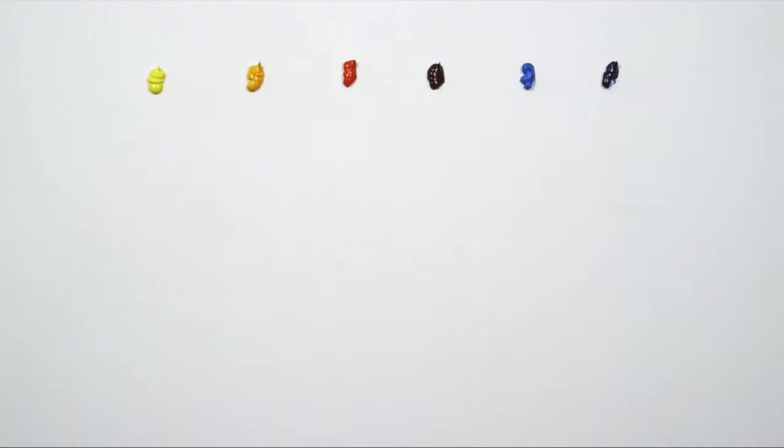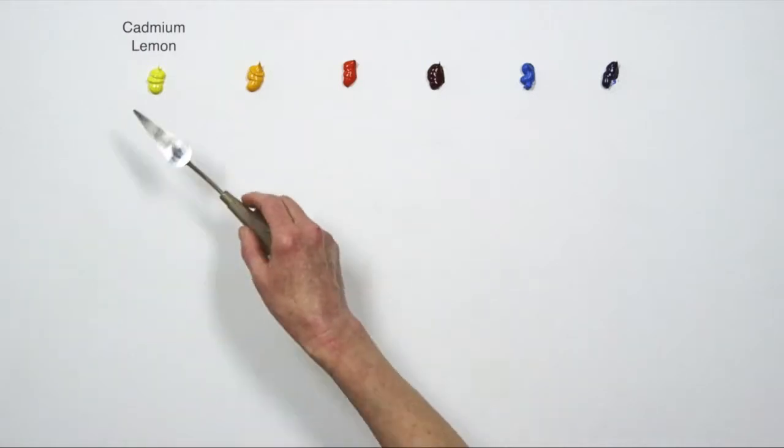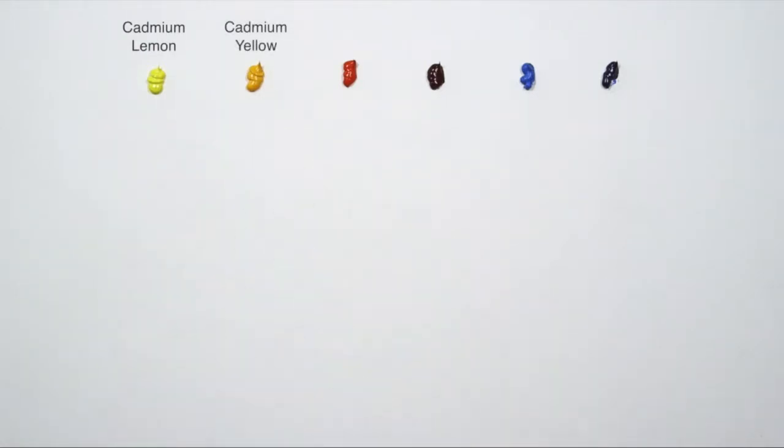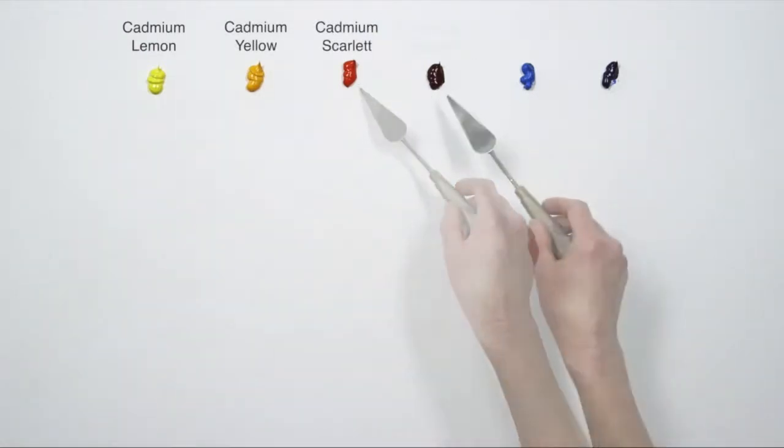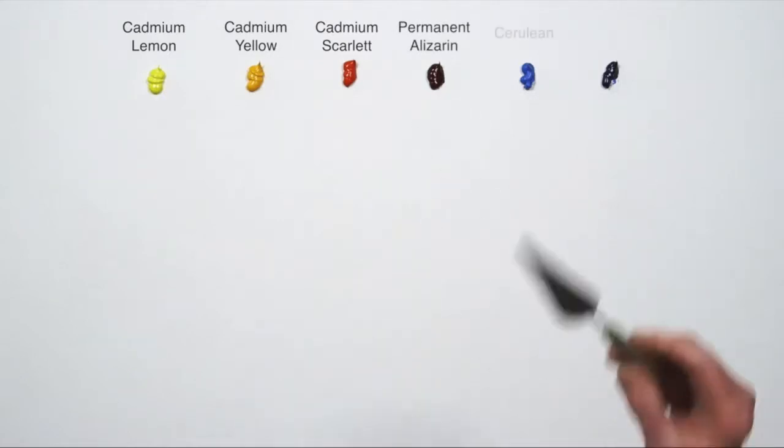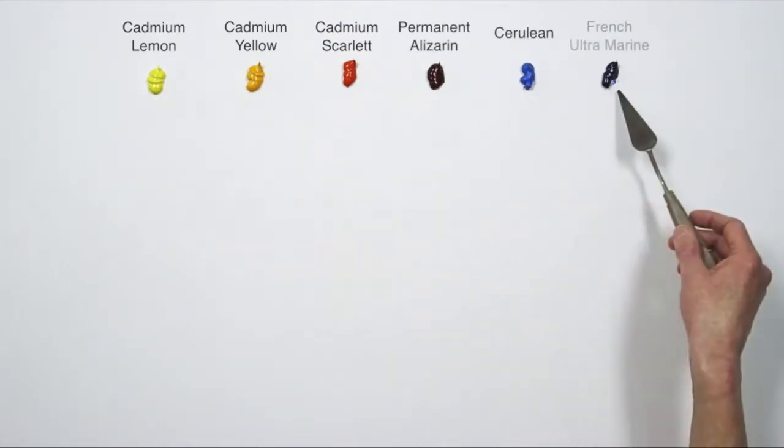I'll be using a palette that contains a warm and cool of each of the primary colors. My yellows are cadmium lemon and cadmium yellow. The reds are cadmium scarlet and permanent alizarin crimson. And my blues are cerulean and French ultramarine.